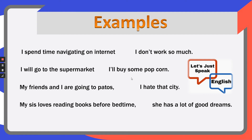Let's see if you've done it well. 'I spend time navigating on the internet since I don't work so much.' You can also use 'because' — not a problem. 'Since' works as well. If some of you used 'since,' congratulations. If you used 'because,' not a problem. If you used 'so,' again, not a problem at all. We have to use a connector of cause or consequence. 'I will go to the supermarket and I'll buy some popcorn.' It's a connector of addition, but you can also use 'because.' You can use 'moreover' — no problem at all.